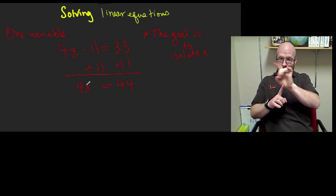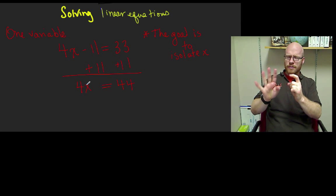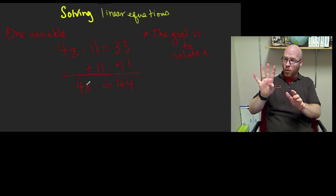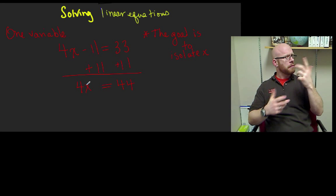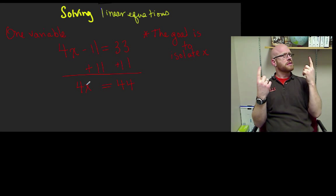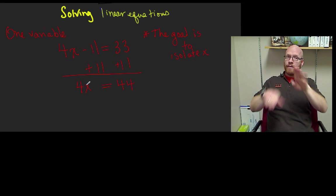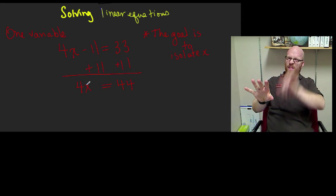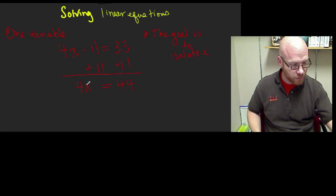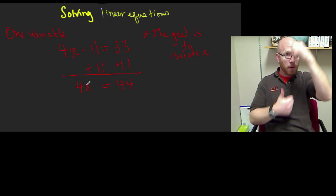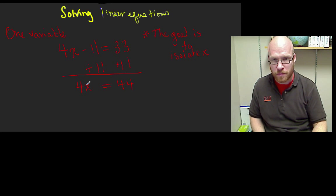Now we've gotten rid of the negative 11. Now we have 4x equals 44. The relationship between 4 and x is 4 times x. Multiplication — the inverse of that would be division. So if we divide 4x by 4, we will be undoing the 4 times x. Remember, we have to work on both the left side and the right side to maintain balance.